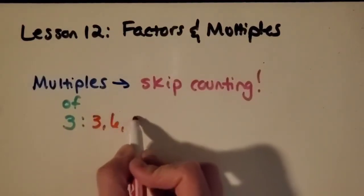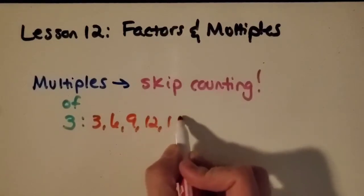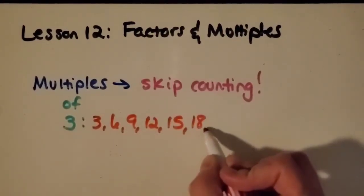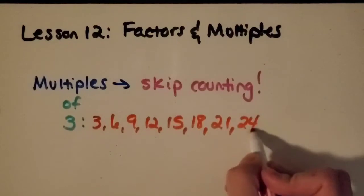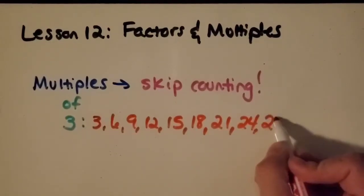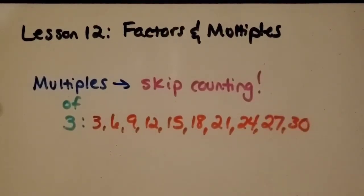Three, six, nine, twelve, fifteen, eighteen, twenty-one, twenty-four, twenty-seven, thirty. So those are the multiples of three.